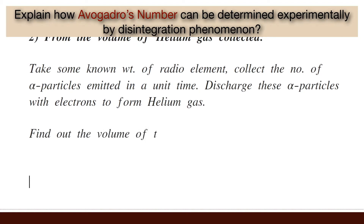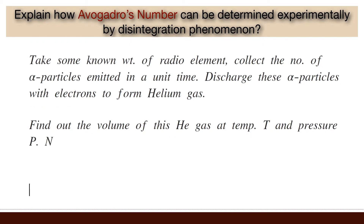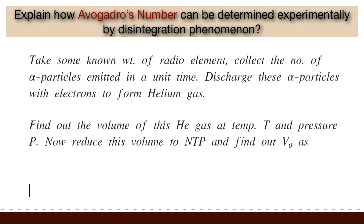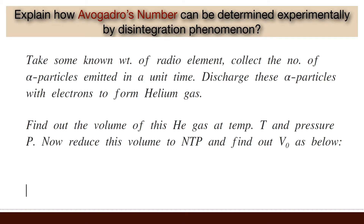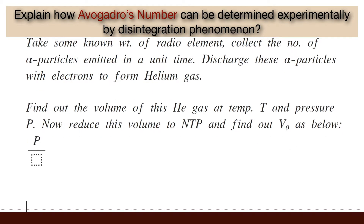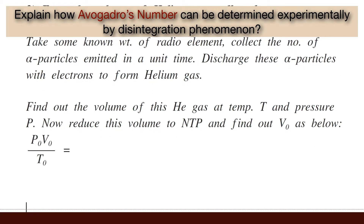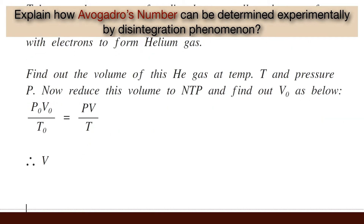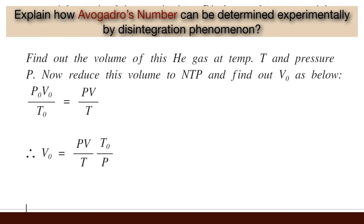Find out the volume of this helium gas at temperature T and pressure P. Now reduce this volume to NTP and find out V₀ using the relation: P₀V₀ / T₀ = PV / T. Therefore, V₀ = (PV / T) × (T₀ / P₀).